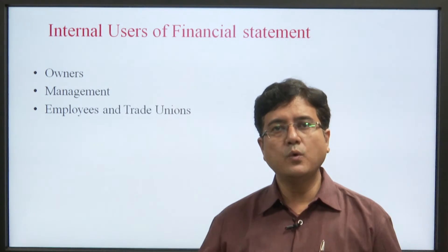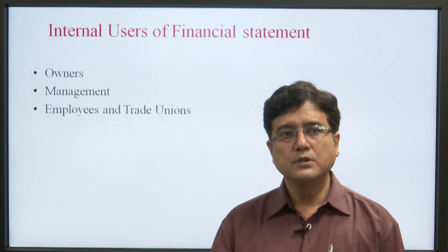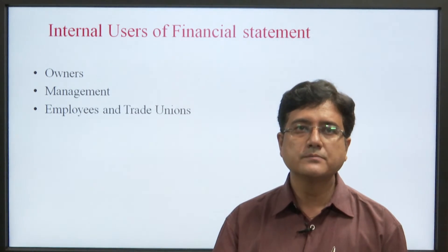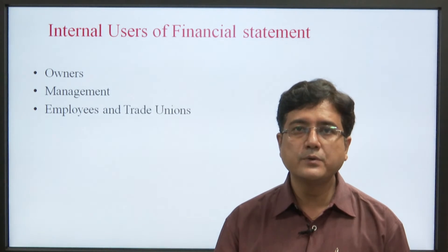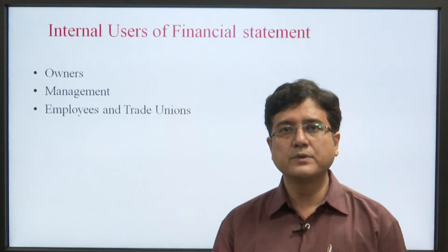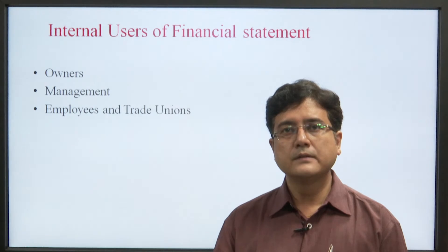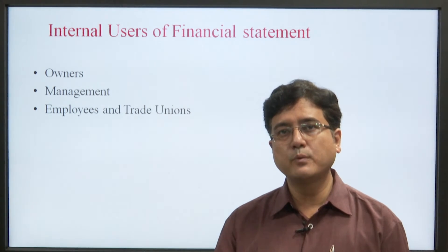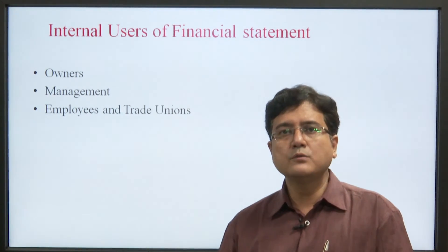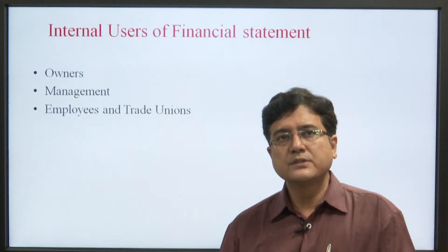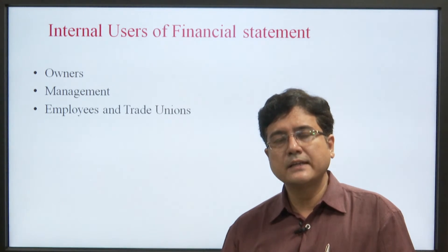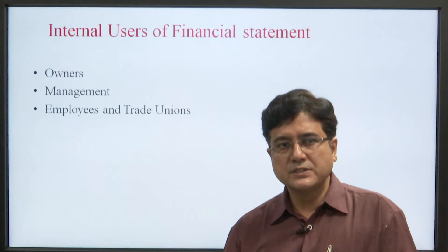Internal users are the owners, management, and employees. Equity shareholders are the owners when a company issues shares. Management runs the company, and employees and trade unions are also internal users. In big manufacturing factories, trade unions also need proper financial statements so they can understand the position of the company. The company has to disclose all financial statements to the trade union as well, because they are also stakeholders and have the right to understand the working, position, strategies, and future prospects of the company.